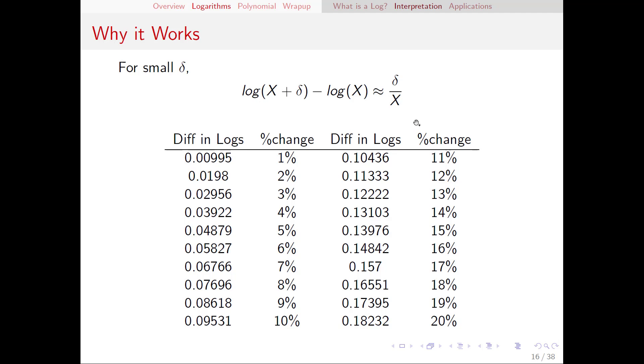I mentioned that this works for small deltas and the smaller the delta we have the better the approximation is. So in this table I have done the math and calculated one percent changes two percent changes and then approximated that using a log. You can see that for a one percent change we have a difference of 0.00995 just shy of one percent and as the percentage change gets bigger the approximation continues to be pretty good although it starts to depart further and further away from the true value that we're after.